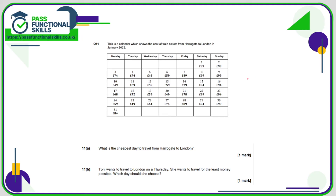Question 6: what is the cheapest day to travel from Harrogate to London? Looking at the calendar for the lowest price — there are several 59s and also a 48. Nothing is less than 48, so the 5th of January is the cheapest day. Tony wants to travel on a Thursday for the least money: the Thursday prices are 59, 59, 49, 74 — so she should choose the 20th of January.